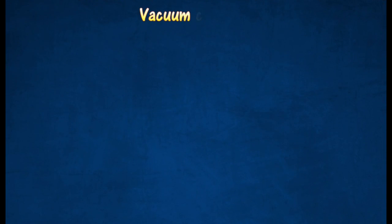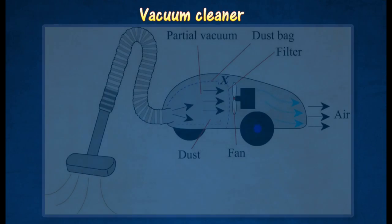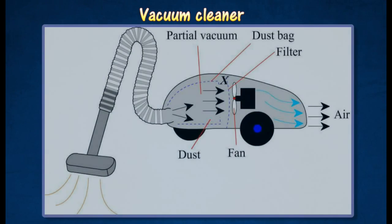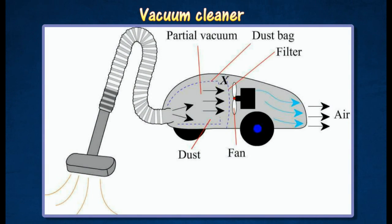A vacuum cleaner operates by applying atmospheric pressure to remove dust particles. When it is switched on, a fan sucks out a stream of air from the space inside to create a partial vacuum.